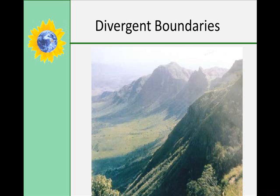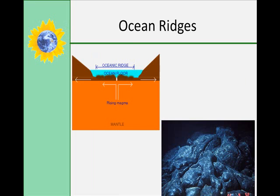Where a divergent boundary forms on a continent it is called a rift or continental rift, such as the African rift valley that you see here in this picture. Where a divergent boundary forms under the ocean, it's called an ocean ridge. This map shows the ocean ridge in the oceanic crust. As the ocean plates are spreading apart, magma will rise up in that center, and then it will fill in the oceanic crust with more magma from the bottom. You can see some recently erupted basalt in the lower picture.